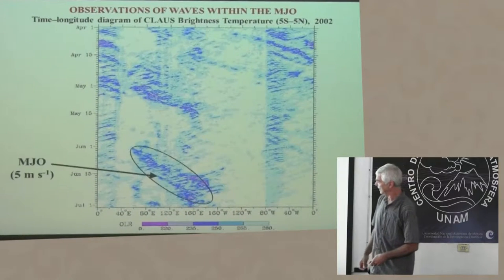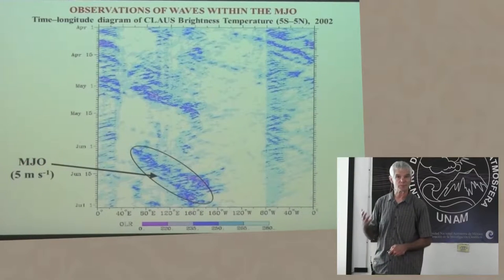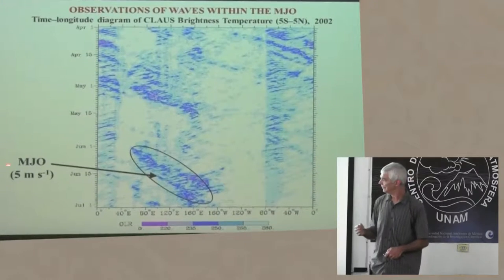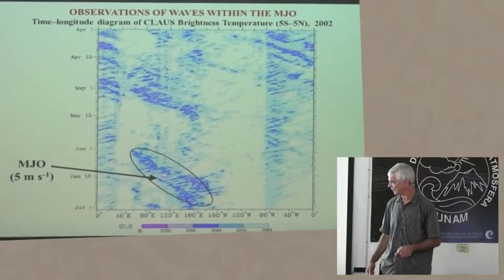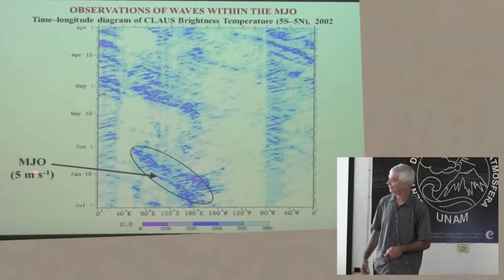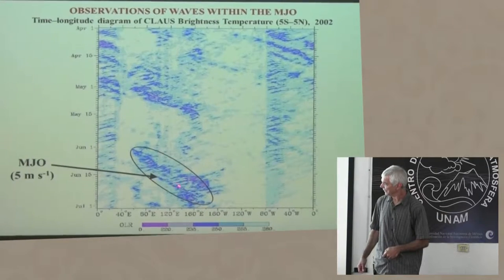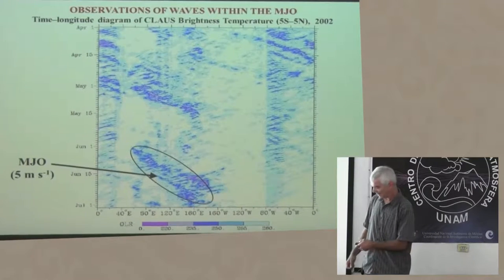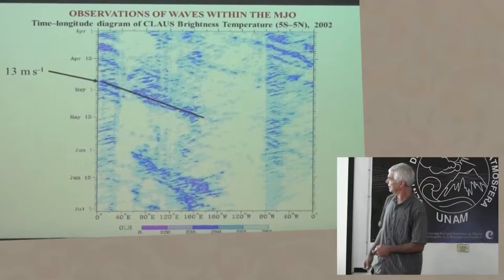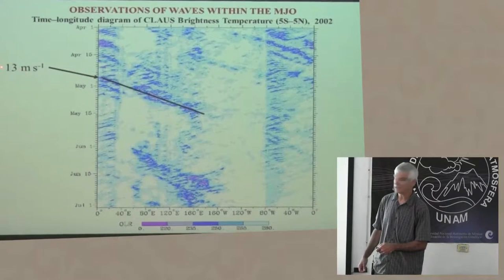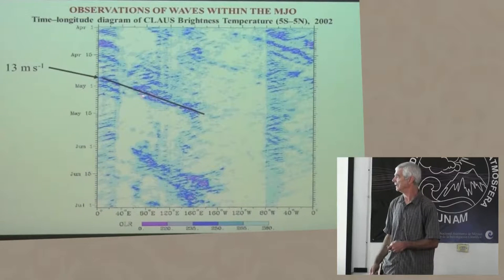The title of the talk contains the term MJO — the Madden-Julian Oscillation — which is really the most important large-scale disturbance by far in the tropics. This was discovered in 1971 by Madden and Julian at NCAR in Boulder, Colorado. There's an envelope of convection moving eastward at about 5 meters per second, very typical of the MJO. But within it are smaller scale features going in both westward and eastward directions. I'll be focusing quite a lot on convectively coupled Kelvin waves as well, which move at about 13 meters per second.